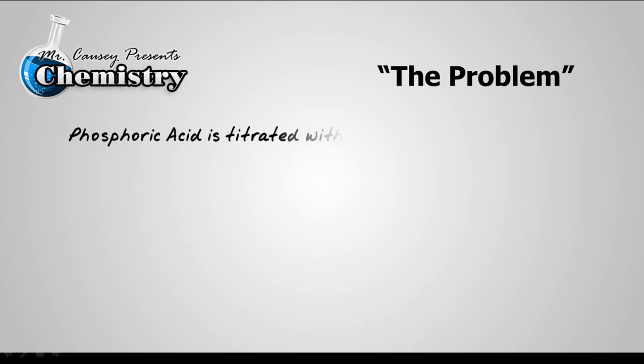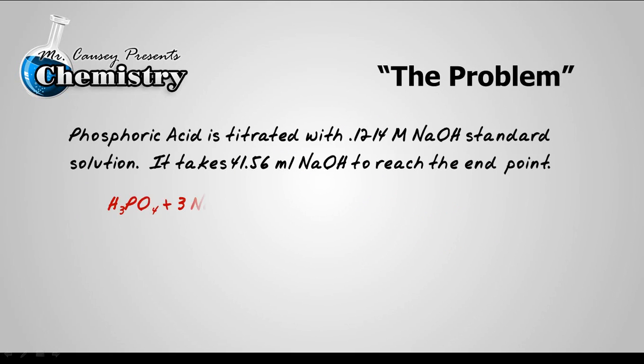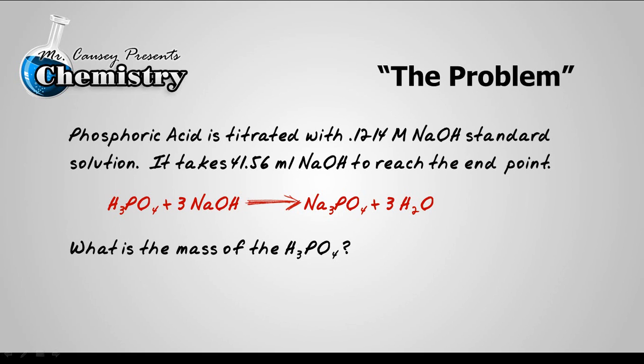The problem: phosphoric acid is titrated with 0.1214 molar sodium hydroxide standard solution. It takes 41.56 milliliters of sodium hydroxide to reach the end point. What is the mass of the H3PO4 or phosphoric acid? And the first thing I'm going to do is make sure that your equation is balanced and I note that that is a balanced equation.